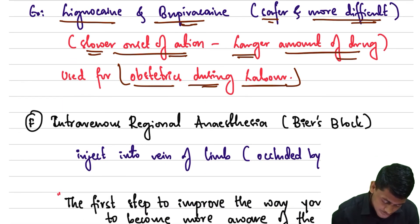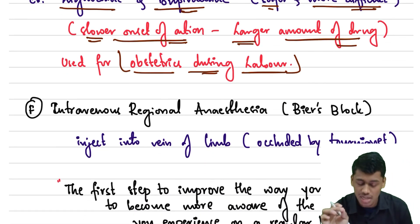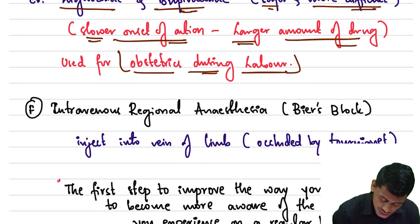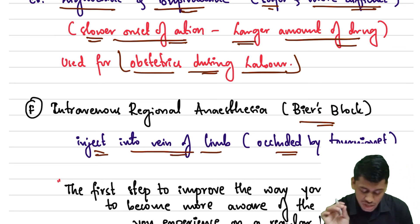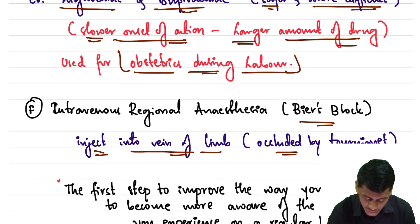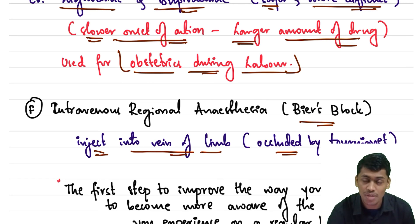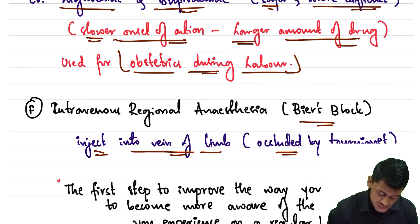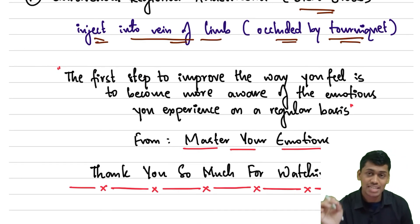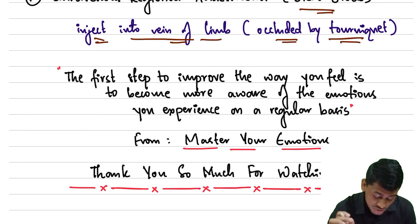Finally, intravenous regional anesthesia, also called Bier's block — here the anesthetic is injected into a vein of the limb, which is then occluded by a tourniquet. This produces regional anesthesia of the limb.